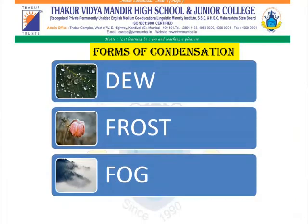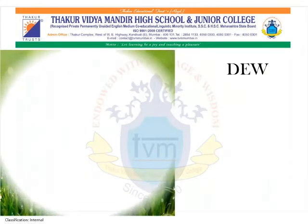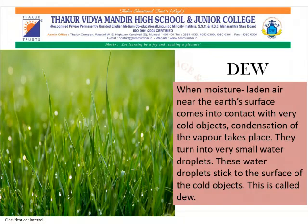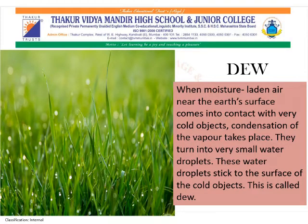When condensation or solidification of water vapor in the atmosphere occurs near the earth's surface, we can see various forms of condensation: dew, frost, and fog. Students, you must have seen dew drops on grass blades in the winter morning. When moisture-laden air near the earth's surface comes into contact with a very cold object, condensation of the vapor takes place. They turn into very small water droplets that stick to the surface of the cold object, and this is called dew.